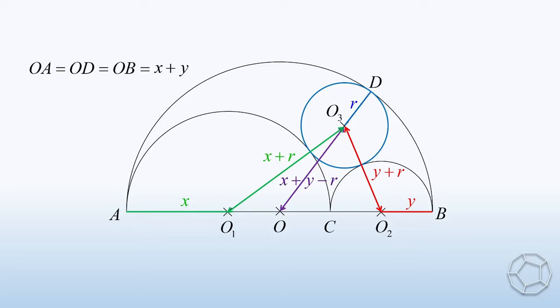Moreover, we also know the lengths of OO1 and OO2. It's because OA is equal to X plus Y, so OO1 is equal to Y. Likewise, OB is also equal to X plus Y, so OO2 is equal to X. All the lengths are ready.